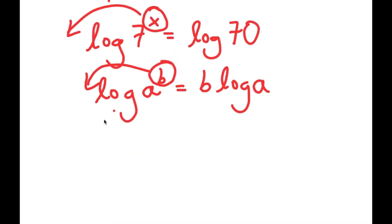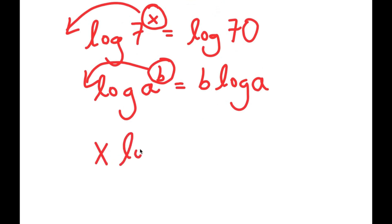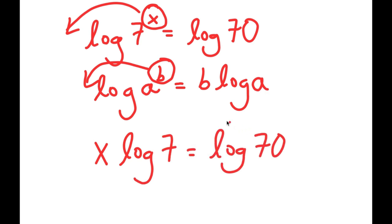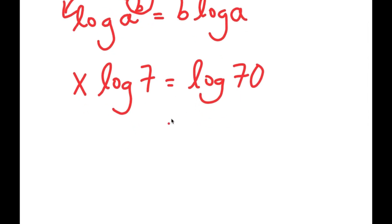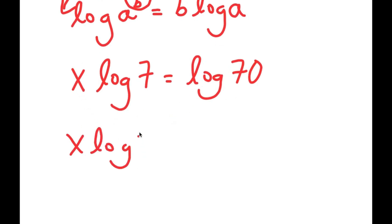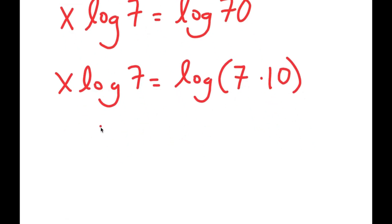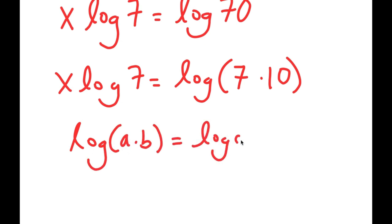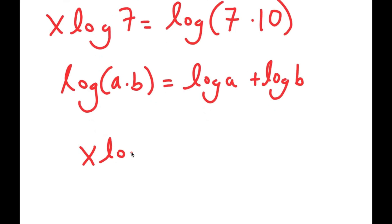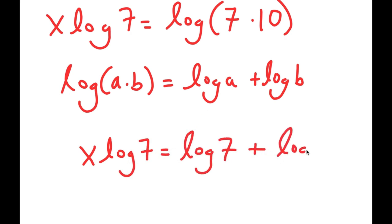So now I get x times log 7 is equal to log 70. Now log 70 is the same thing as log of 7 times 10. Another property of logarithms is that log(a times b) equals log a plus log b, so log of 7 times 10 equals log 7 plus log 10.